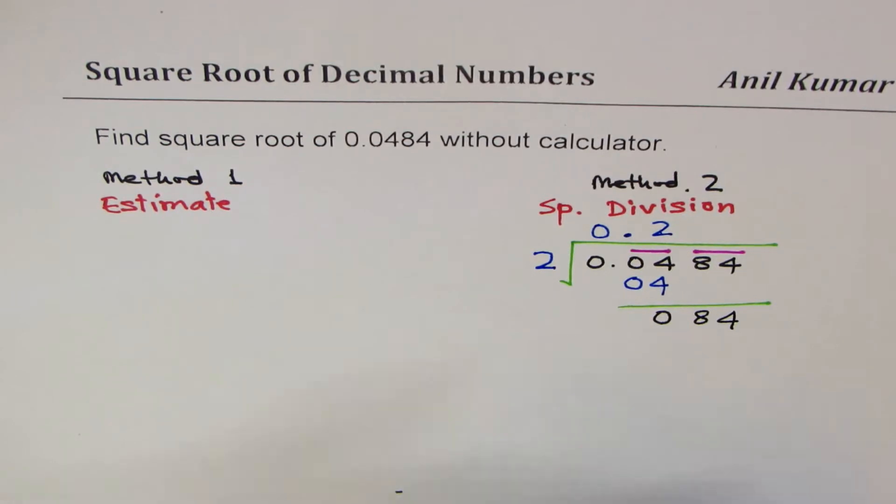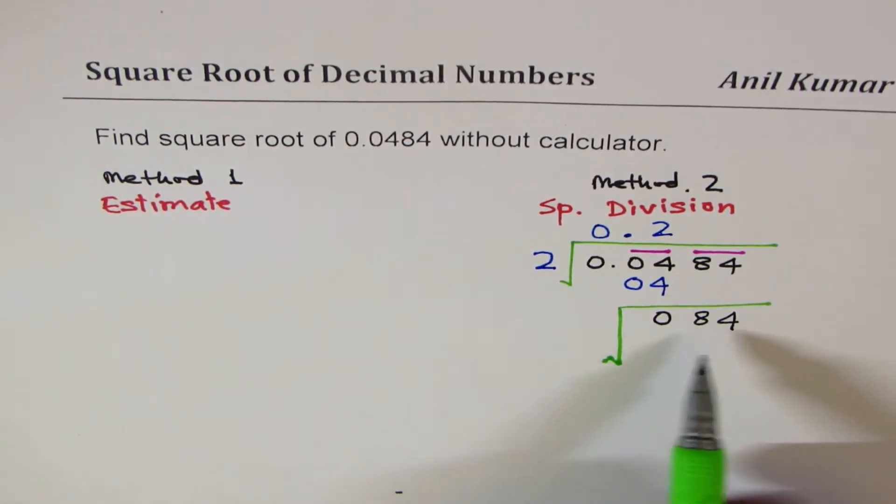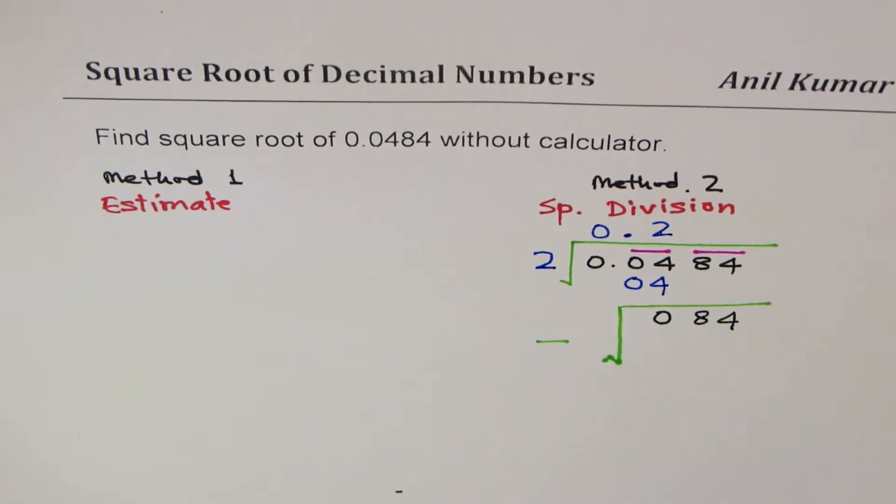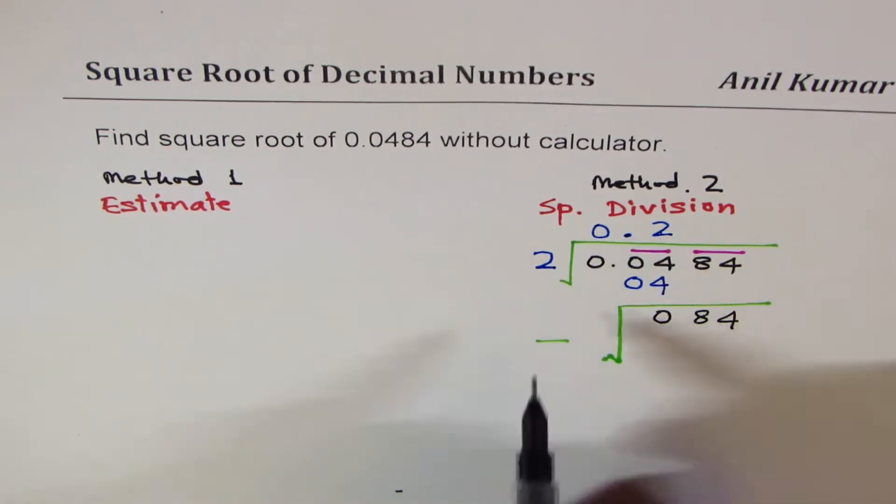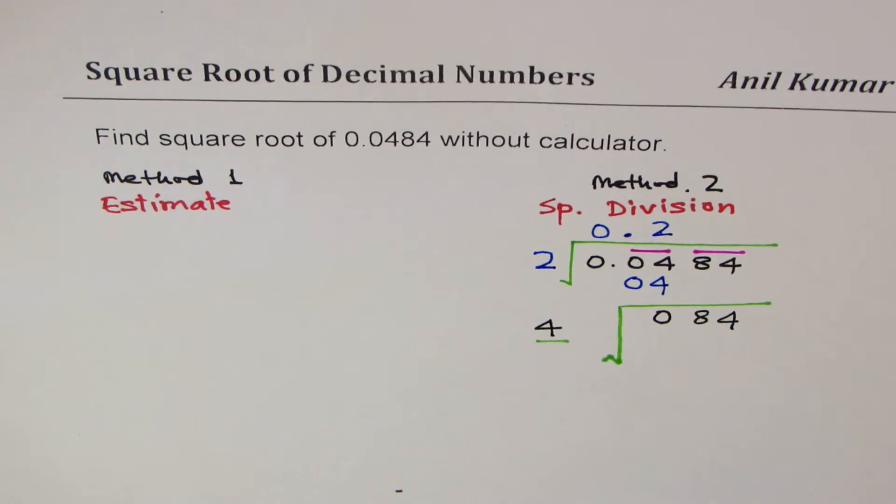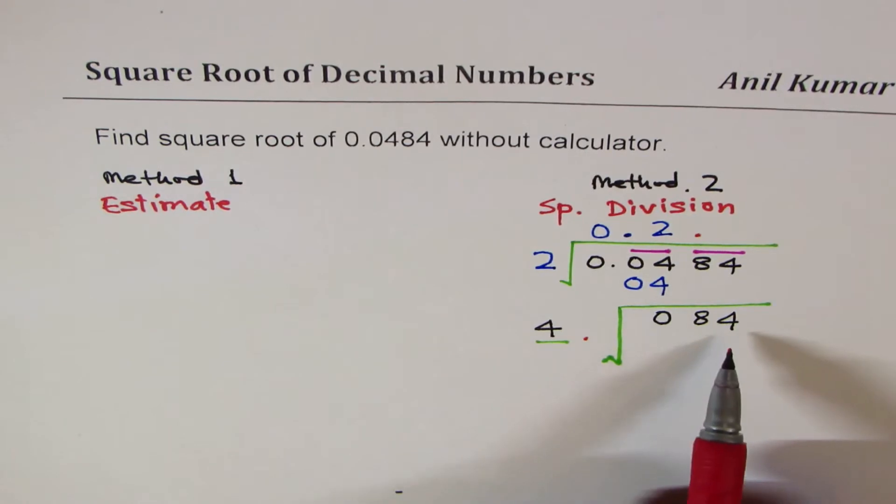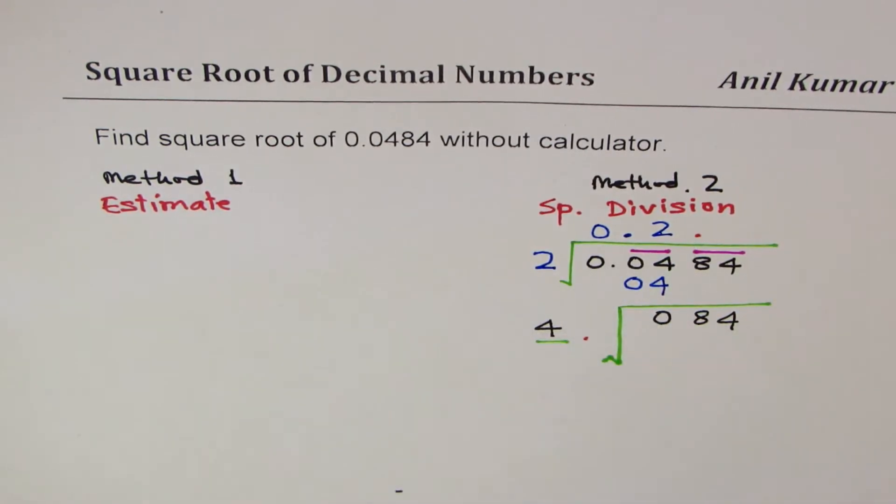We get 0 here but we get 84 from the other side, and we'll perform this division once again. This is a special division. The number which you get here is twice the number on the quotient, 2 times 2 is 4. Then we have to look for a number which will divide into 84 and write exactly the same number.